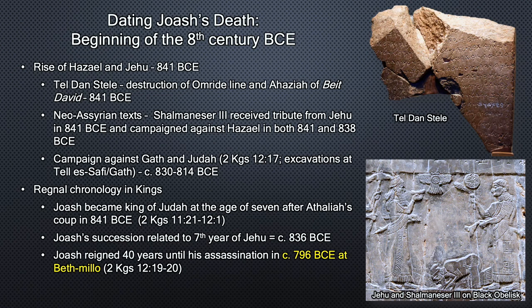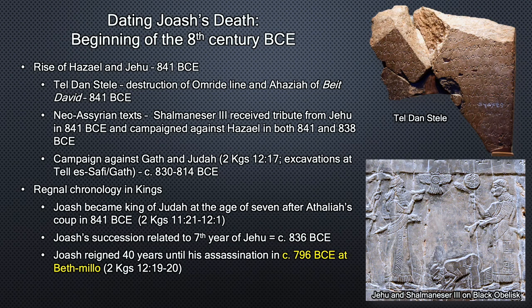Joash's reign occurred in an era marked by a significant number of extra-biblical texts that mention biblical kings and events. Besides the connection with Gath, the beginning of Joash's reign can be related to Jehu's coup of the Omri dynasty. This event can be connected with the contemporaneous details from the Tel Dan Stele that likely indicate that Hazael killed Jehoram, king of Israel, and Ahaziah, king of Judah — or of Beit David, as the Stele indicates. This event, which apparently led to Athaliah's coup in Jerusalem as well, is well dated to the year 841 BCE, on the basis of campaigns led by the Neo-Assyrian king Shalmaneser III against Hazael of Aram Damascus — one campaign dated to his 18th regnal year, which would be 841 BCE, and in that same year Jehu offered him tribute, but also in his 21st regnal year, which would relate to the year 838 BCE.